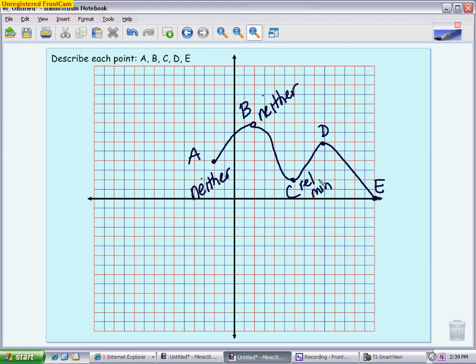D is a relative maximum. It's a peak on my graph—not the highest point on my graph, so I don't call it an absolute, just a relative maximum. Finally, E is not a relative maximum or minimum. However, it is the lowest point you ever see on this graph in this closed interval. So this is the absolute minimum.